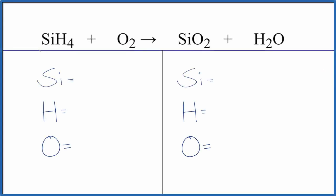Let's balance the chemical equation SiH4 plus O2. This is silicon tetrahydride and oxygen gas. The first thing we do when we balance equations is count the atoms up.